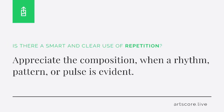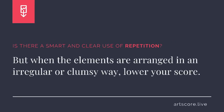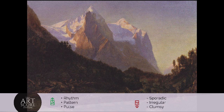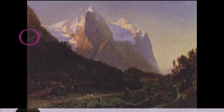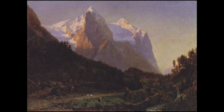Repetition. Is there a smart and clear use of repetition? Appreciate the composition when a rhythm, pattern, or pulse is evident. But when the elements are arranged in an irregular or clumsy way, lower your score. I have to score the work a 4. I feel the artist may have been thinking about repetition, but not with any level of intensity or intentionality. What's your score?